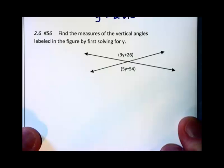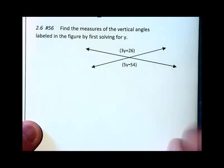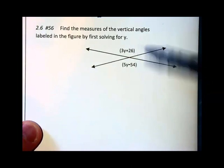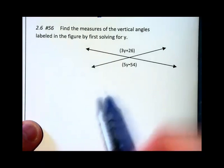Find the measure of the vertical angles. Start by solving for y. Since these angles are across from each other when the two lines intersect, they are vertical angles. And therefore, they are equal in measure.